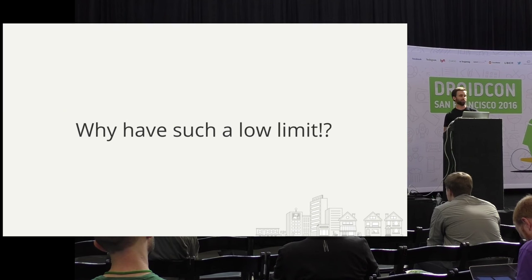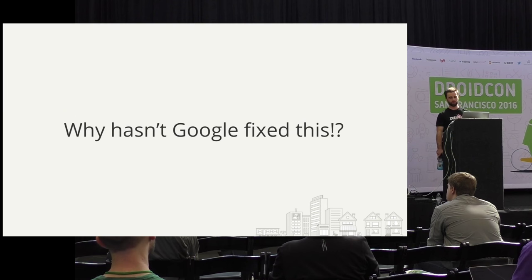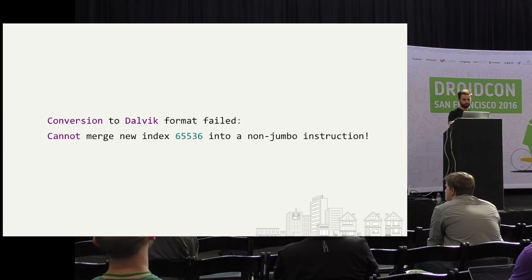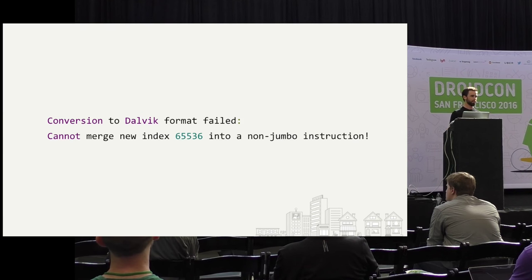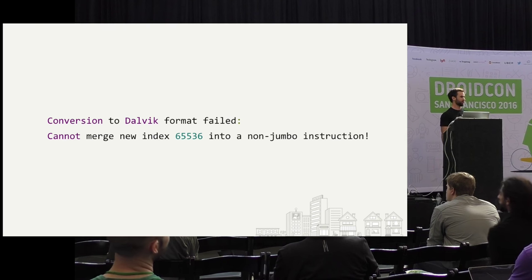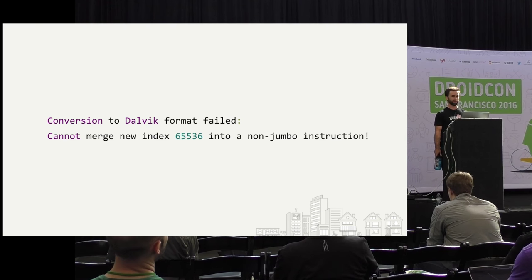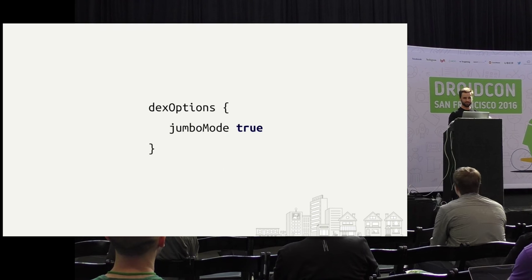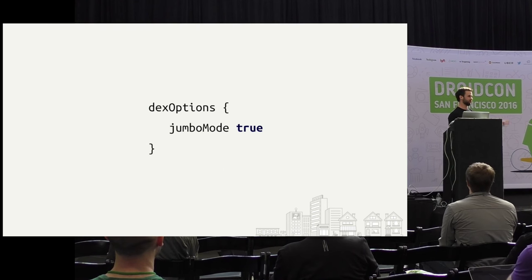The next question is why hasn't this been fixed? In relation to that, I'd like to bring up an analogous problem — has anybody seen this error before? This is the same problem but with strings. You have too many strings and can't reference more of them. But this is fixable, right? You go to Stack Overflow, find something to copy-paste into your build.gradle, set a flag, and all of a sudden your build works again. But what did that actually do under the hood?